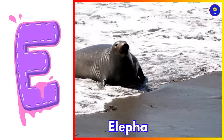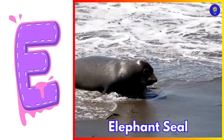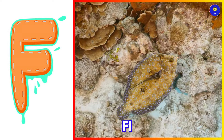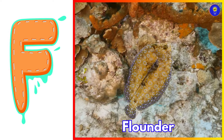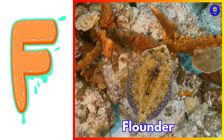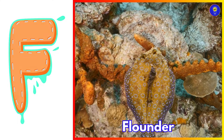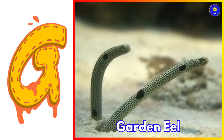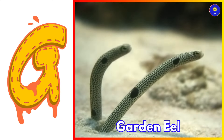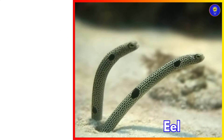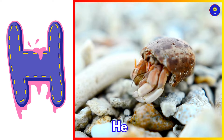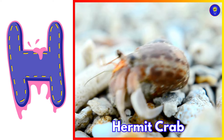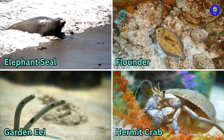E is for elephant seal. Eh, elephant seal. F is for flounder. Fuh, flounder. G is for garden eel. Guh, garden eel. H is for hermit crab. Ha, hermit crab.